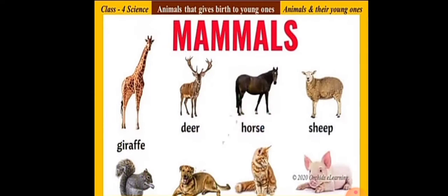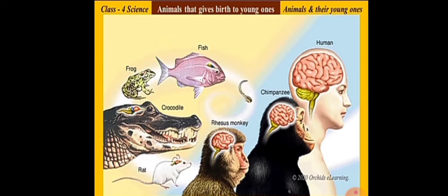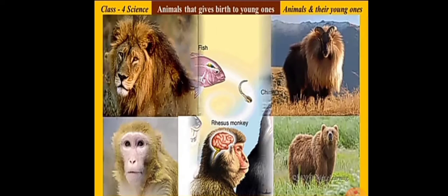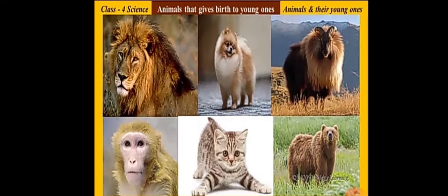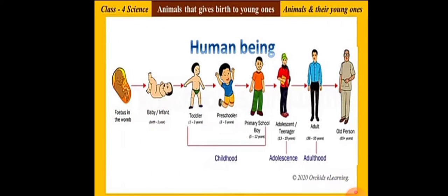Mammals are examples of such animals. Mammals have very well developed brains. Mammals have hair on their body. Human beings, along with many other animals, are mammals.